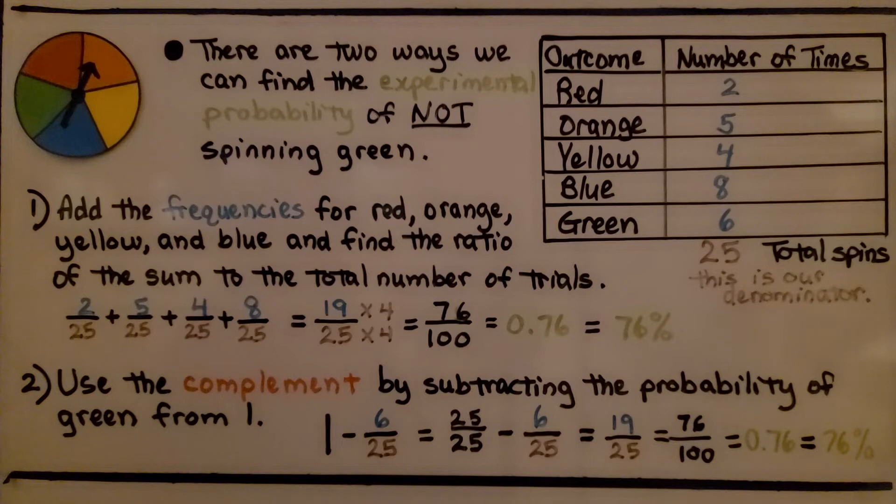Now everyone who does this experiment can get different results. Each set of trials will result in different sets of data. You could try this experiment with twenty-five spins and get completely different numbers for each color than someone else.